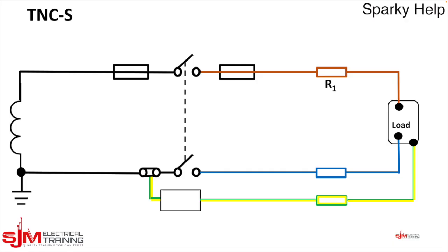Let's label it up. So we have the line conductor R1, the neutral conductor RN, the CPC R2. We have the transformer winding. We have the star point of the transformer. We have the earth electrode of the transformer.